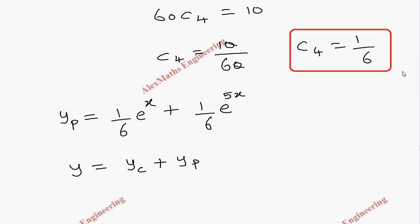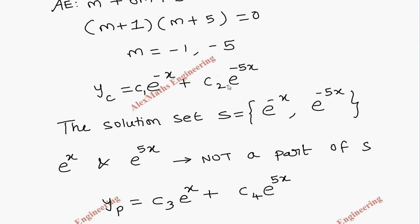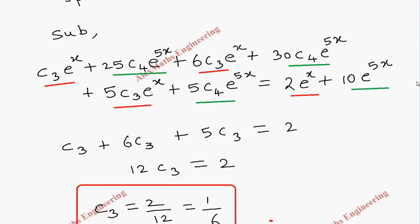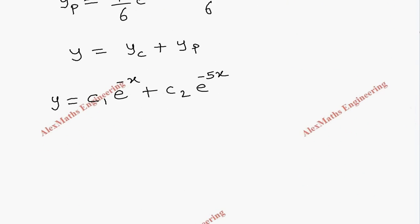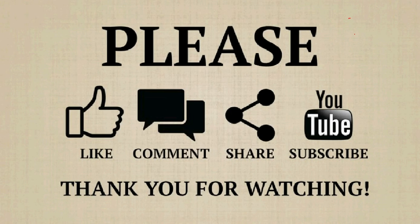Now, the complete solution is complementary function plus particular integral. So, y equal to c1 e power minus x plus c2 e power minus 5x. Along with that, we have to add the particular integral, which we got here as 1 by 6 e power x plus 1 by 6 e power 5x. Thank you.